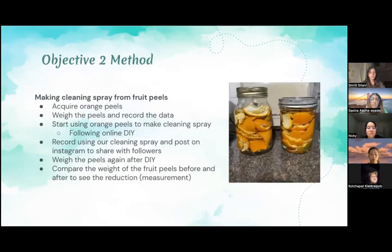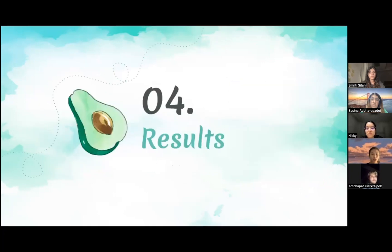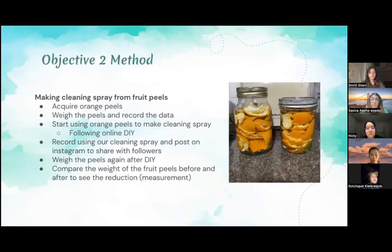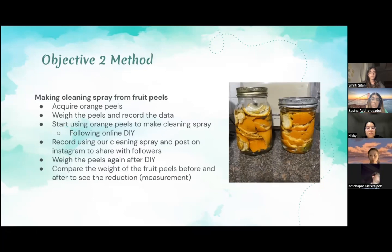Moving on to the method to meet our objective two, we decided to make a DIY cleaning spray from orange fruit peels as a means to reduce fruit peel waste. We acquired orange peels and weighed them, recording the data before doing our DIY. We then started making our cleaning spray by following an online DIY guide. During this, we also recorded ourselves using the cleaning spray to post on our Instagram and demonstrate its effectiveness. Once our cleaning spray was made, we weighed the fruit peels again as our data after doing the DIY. In order to measure whether there is a reduction in fruit peel waste, we compared the weight of the fruit peels before and after doing our DIY.